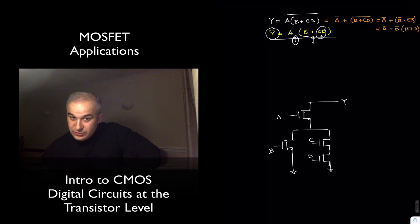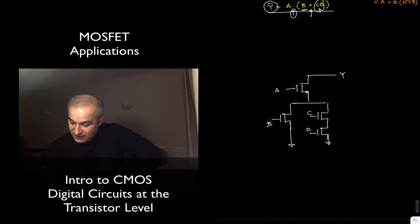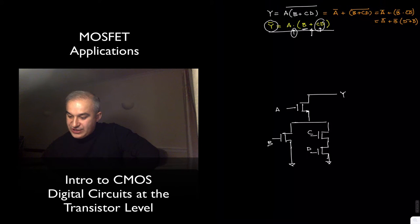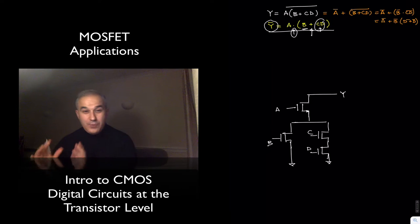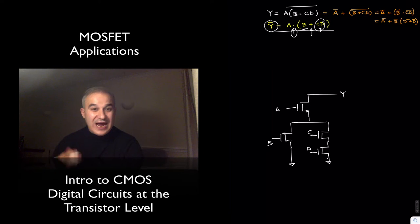Meaning, if A is ON, and then B is ON, for instance, you will have a path to ground, you will have a logical low. Or if A is ON, and C and D are ON, you will have also a path to ground. This is the pull-down network, meaning pulls the output down to a logical low, it connects the output to ground.